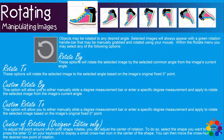Custom Rotate By. This option will allow you to either manually slide a degree measurement bar or enter a specific degree measurement and apply to rotate the selected image from the image's current angle.